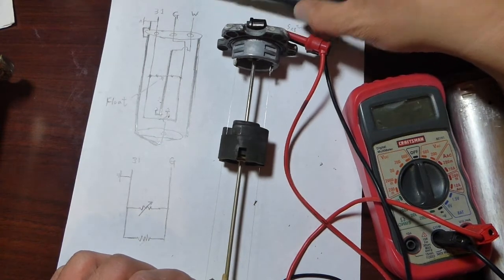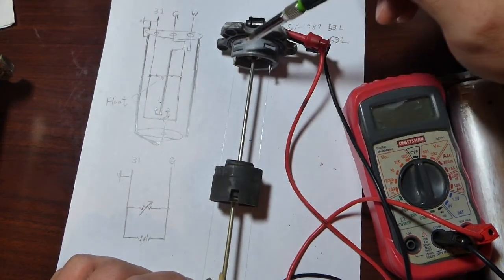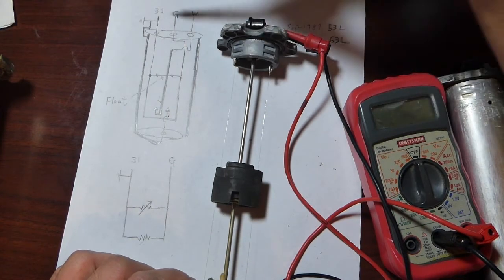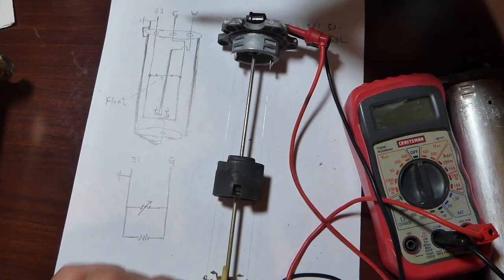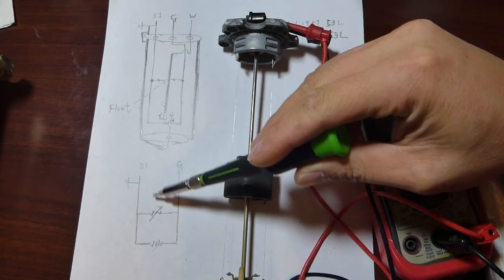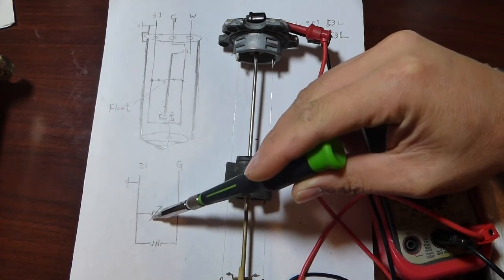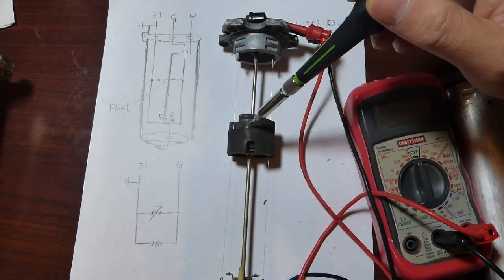As the float goes up and down, it changes the resistance between terminal 31 and terminal G. There's an equivalent electrical diagram to show you there's two parallel resistors and one changes according to the fuel level.